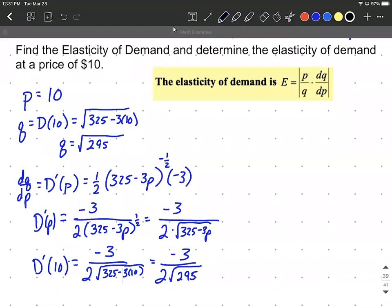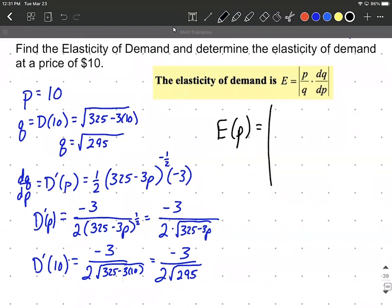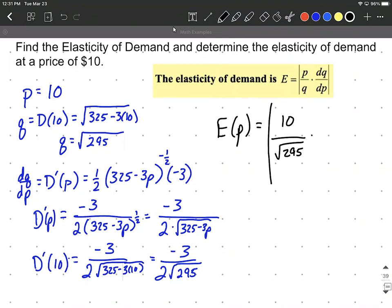Now we just need to substitute into our elasticity of demand formula. E of P is going to be the absolute value of P we said was 10. Q we said was the square root of 295 multiplied by we have negative three divided by two times the square root of 295. Close off some absolute value signs. Now as far as simplifying down goes, we can go ahead and combine a few things together. We could say 10 times negative three is negative 30 for our numerator. And then we have a two in our denominator. But as we multiply the square root of 295 times itself, another square root of 295, this works out to be 295 without a square root over top.